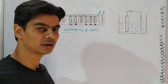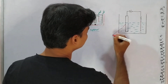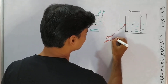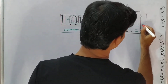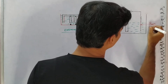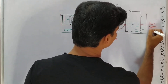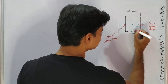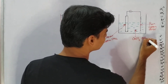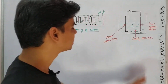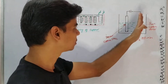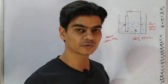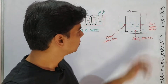The impure copper slabs form the anode, and the pure copper strips form the cathode. The electrolyte we use is copper sulfate solution, because we need to deposit pure copper on the thin cathode strip.